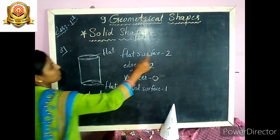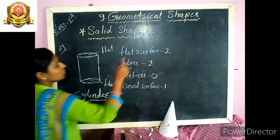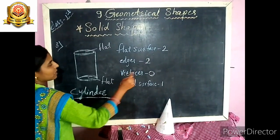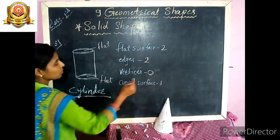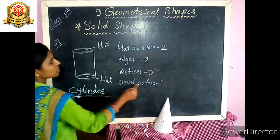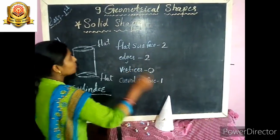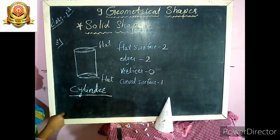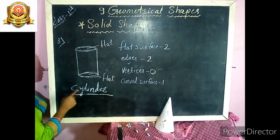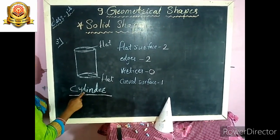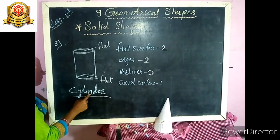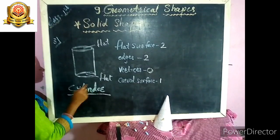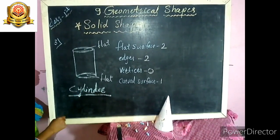So: flat surfaces is 2, edges is 2, vertices is 0, and curved surface is 1. The spelling of cylinder is C-Y-L-I-N-D-E-R, cylinder.